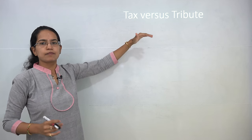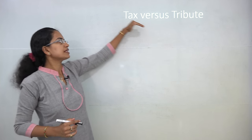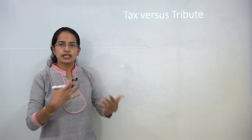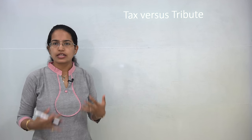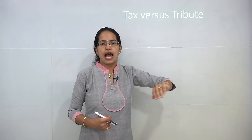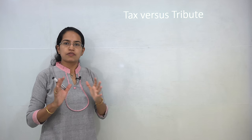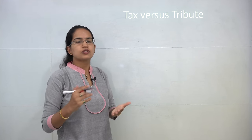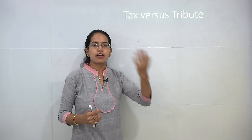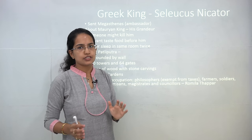During the Mauryan period, tribute was also common alongside tax. Tax is levied monthly, quarterly, semi-annually, or annually as a fixed amount or proportion. Tribute, on the other hand, is a willing contribution that can vary in amount and kind — it is something a person willingly offers to the empire. That was the basic difference between tribute and tax during that time.